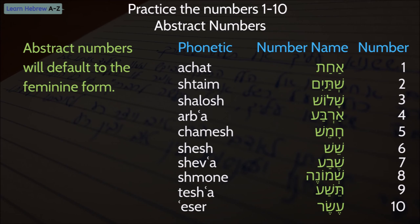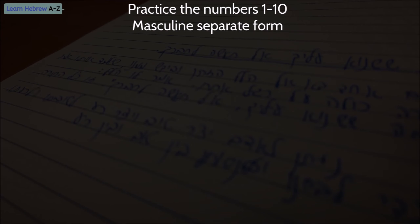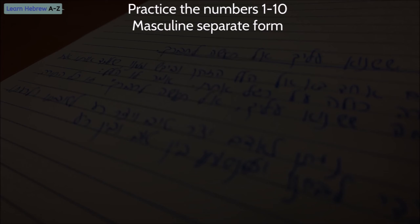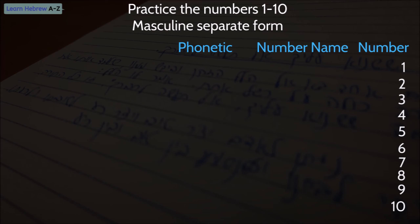That is not all. This form of numbers, when they stand alone, is called the separate form. There is another form of numbers called the construct state. The construct state is not relevant for this lesson and will be discussed in future practice lessons. Now, talking about the separate feminine form, there is also a separate masculine form for numbers in Hebrew. Since the abstract numbers form defaults to the feminine form, using the masculine separate form for abstract numbers is incorrect.